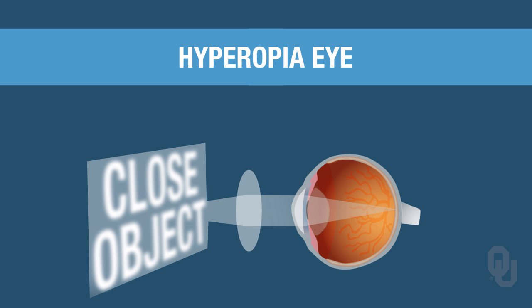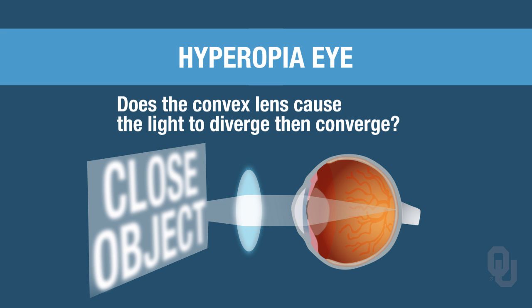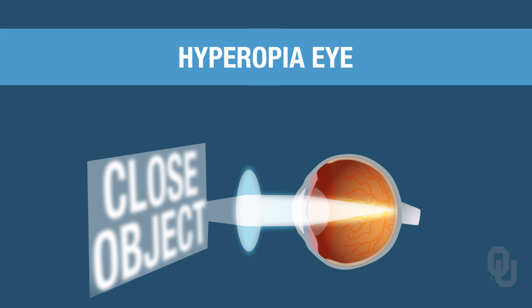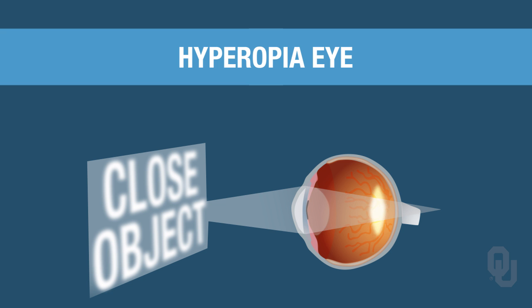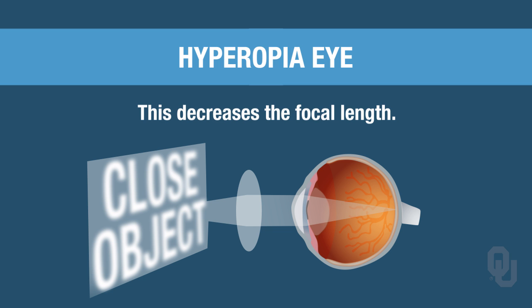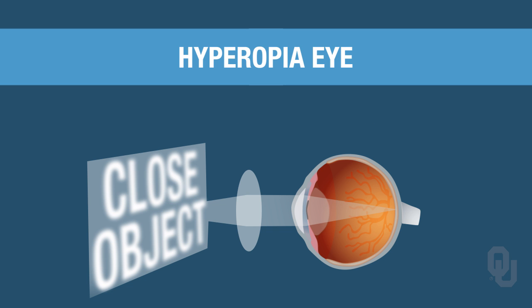To shorten the focal length in hyperopia, we use a convex lens. Unlike the concave lens, the convex lens does not cause the light rays to diverge first — it causes them to converge directly. As light passes through the cornea and the lens, it refracts; adding the convex lens produces more convergence, so the light rays converge onto the retina. This decreases the focal length. If your focal length is too long, we shorten it by adding the convex lens, giving us more refraction.